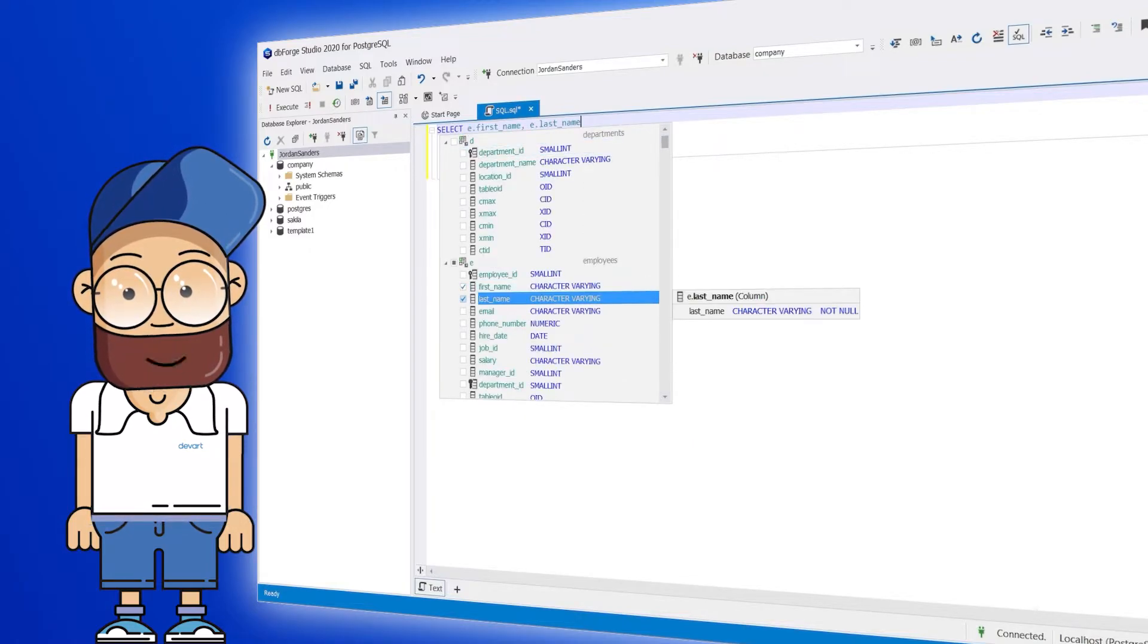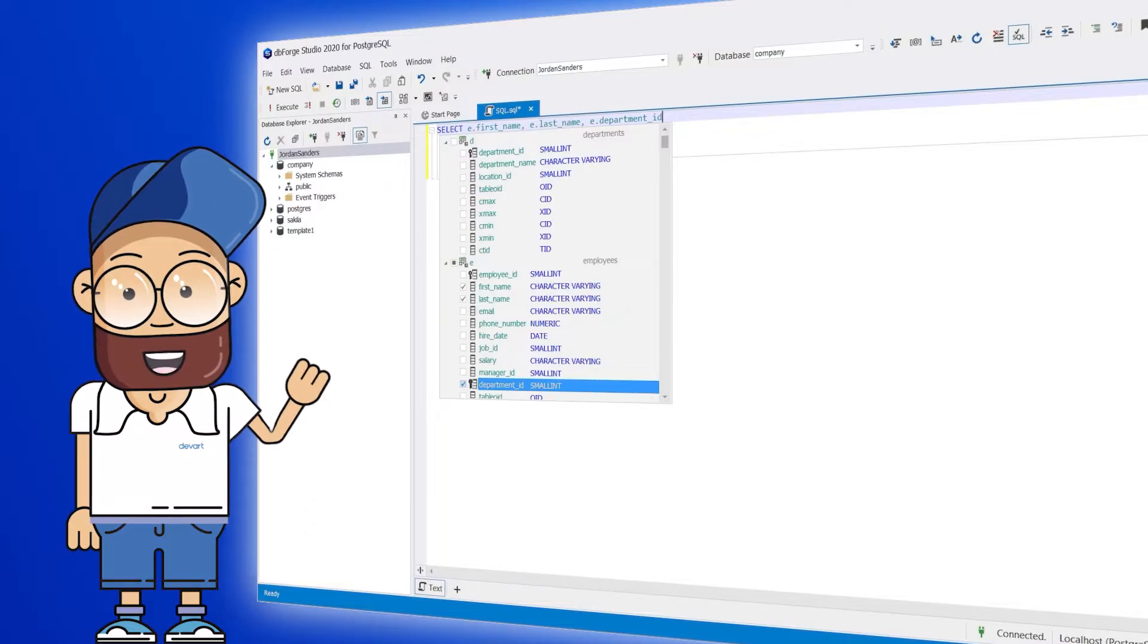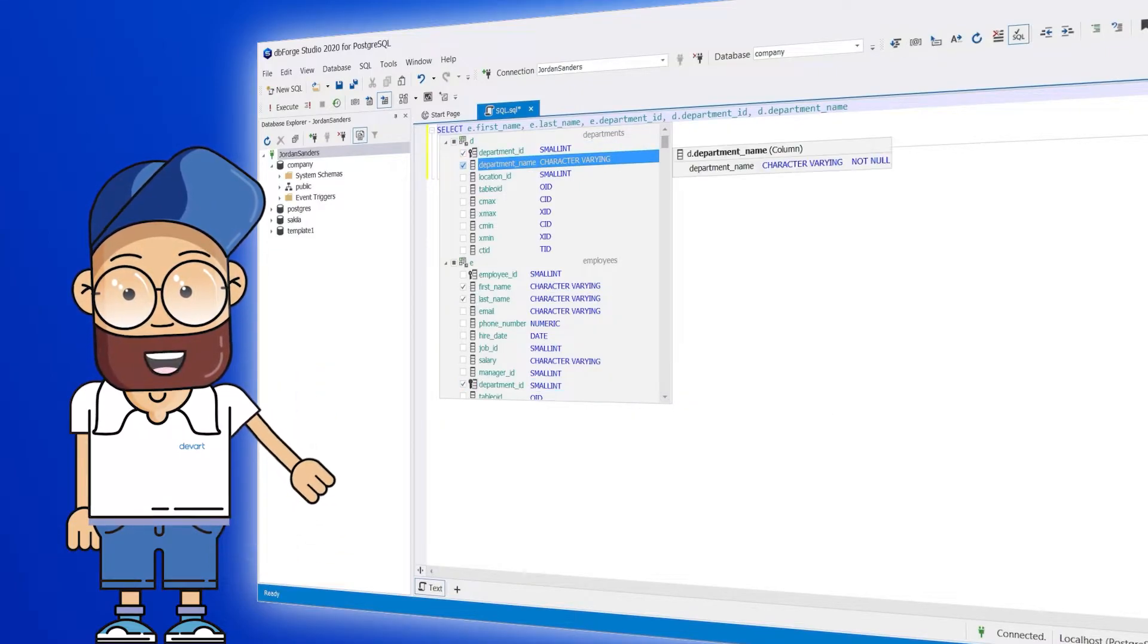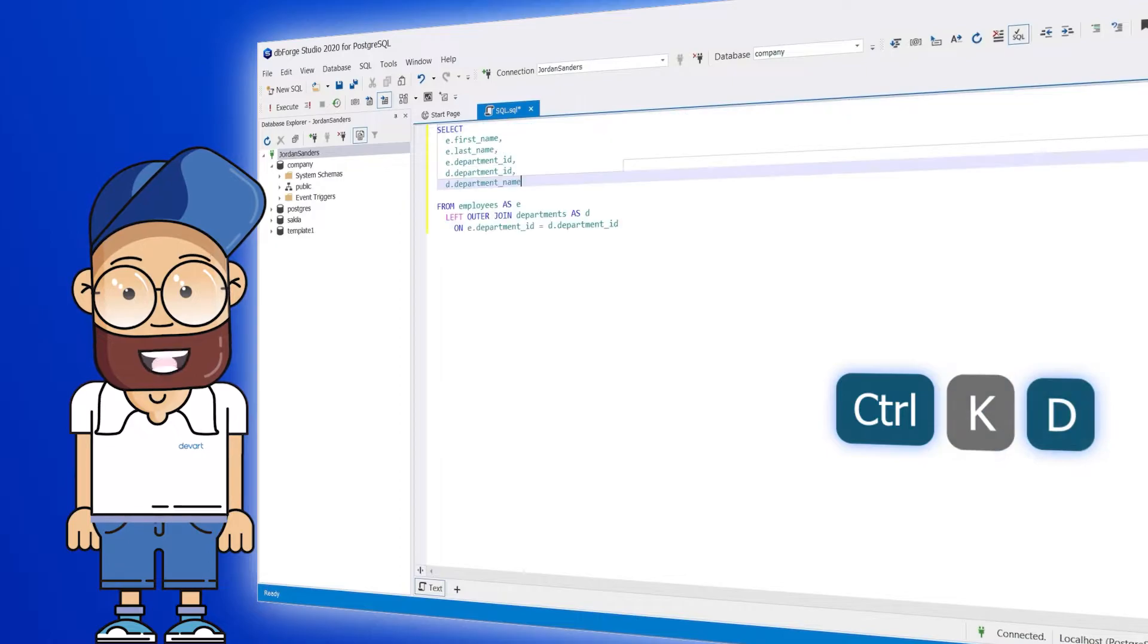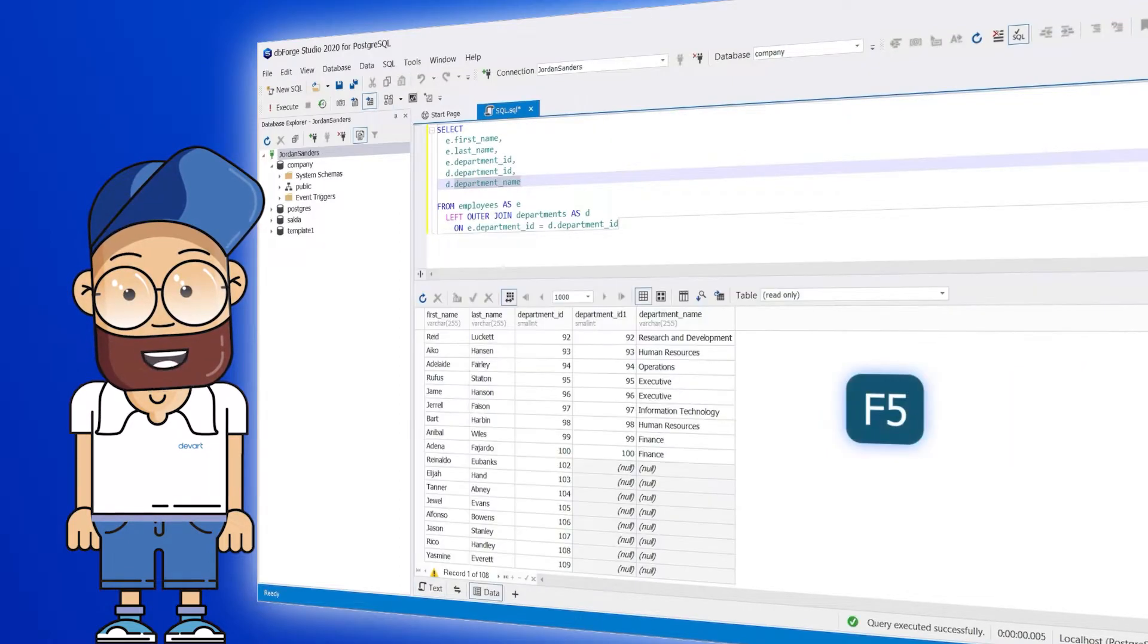With dbForge Studio for Postgres, we can create a query to find the departments that the employees belong to, as well as the employees who are not assigned to any department. Now let's run the query and check the result.